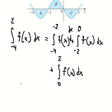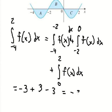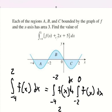So for this interval we have negative three, for this one positive three, and for this one we have negative three. So this one gives us negative three. Now we need to calculate this one.